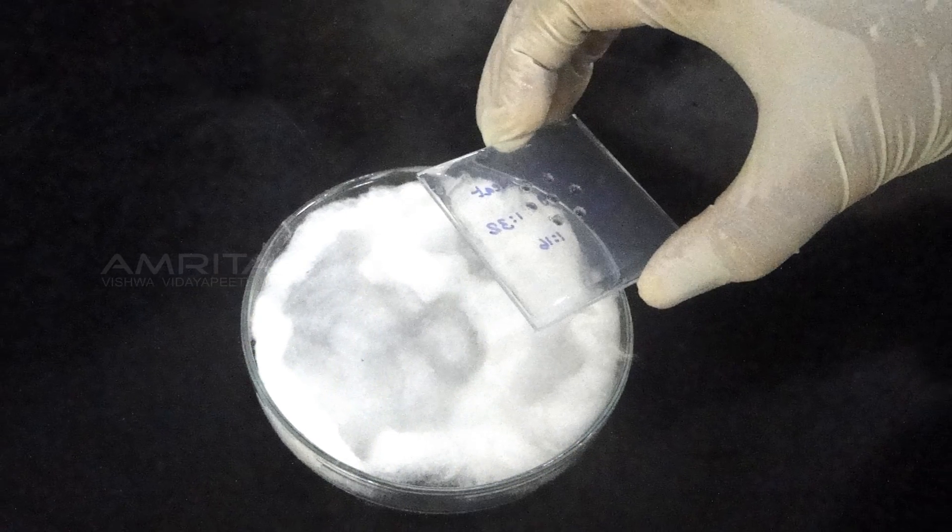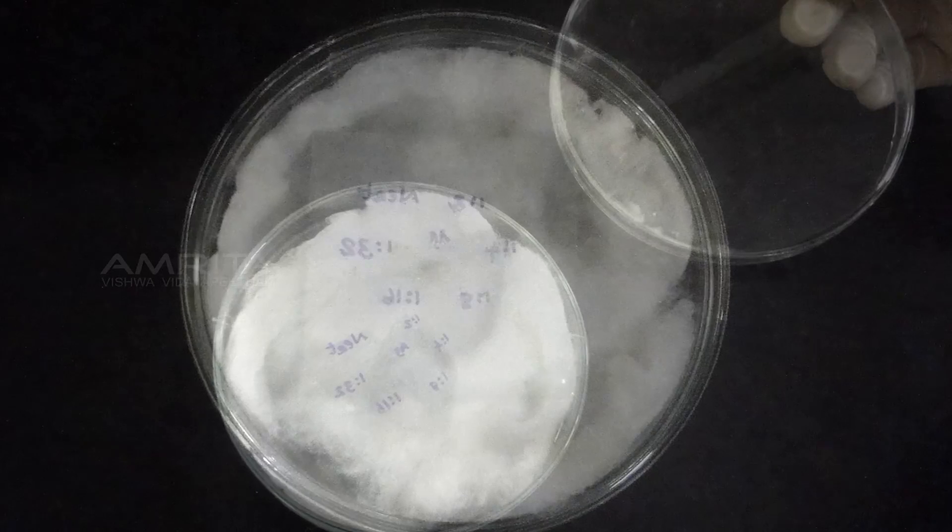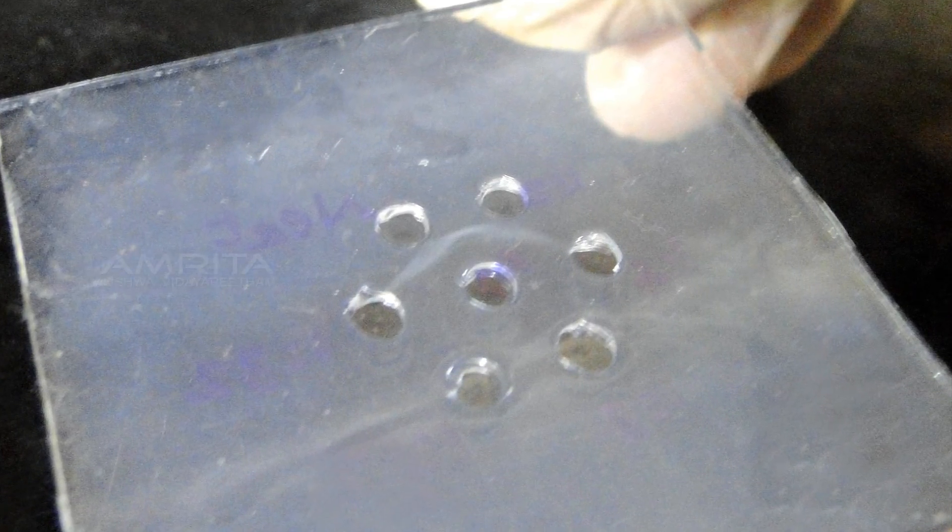Place the plate in a moist chamber and incubate at room temperature overnight. After incubation, observe for opaque precipitant lines between the antigen and antiserum wells.